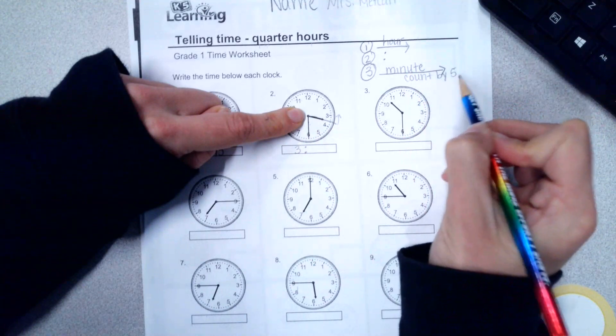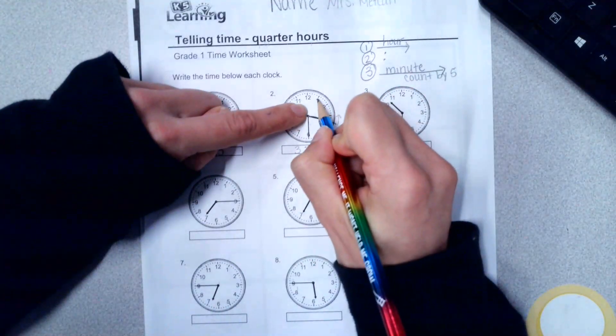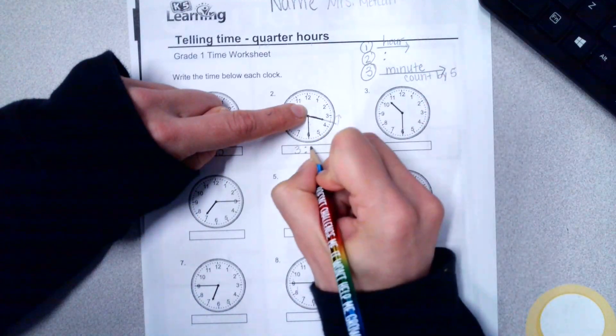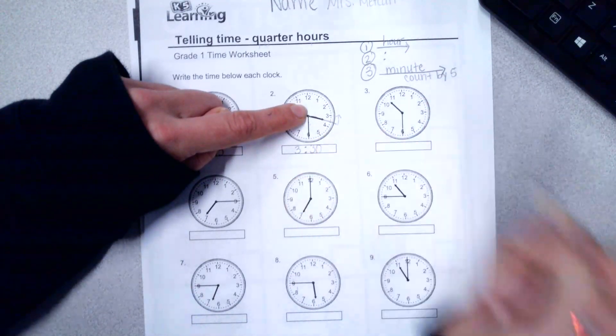And then for the minute hand, we count by five: five, ten, fifteen, twenty, twenty-five, thirty. This time is three, thirty.